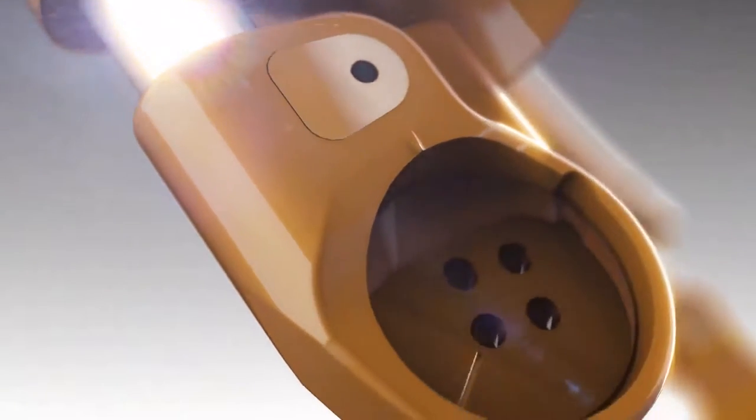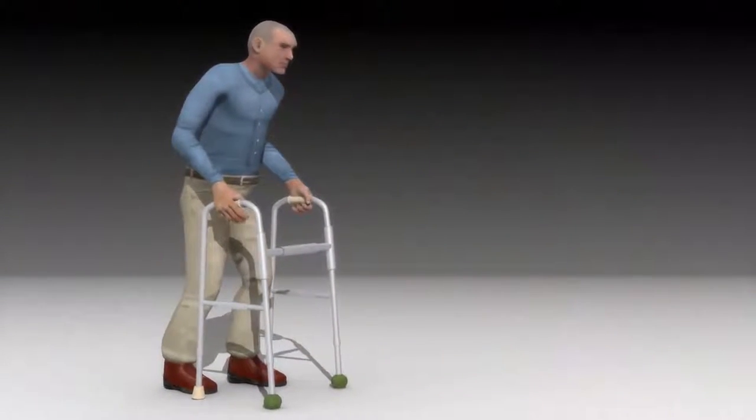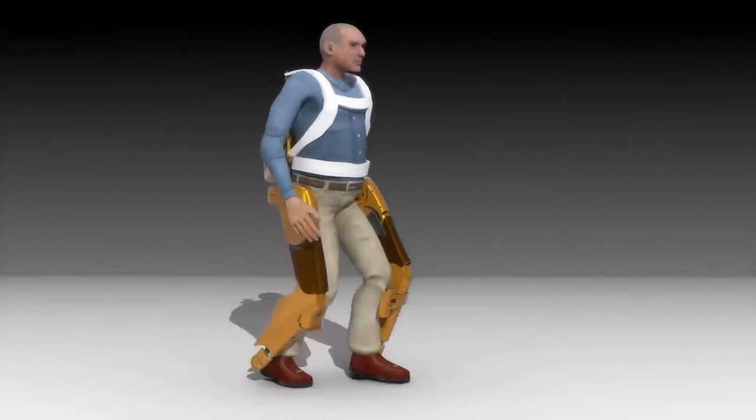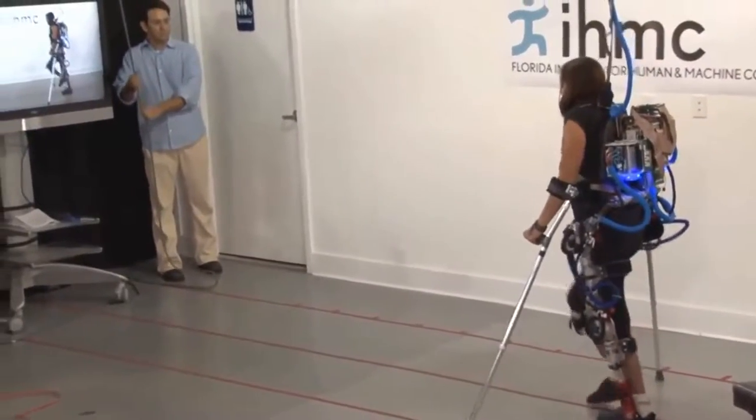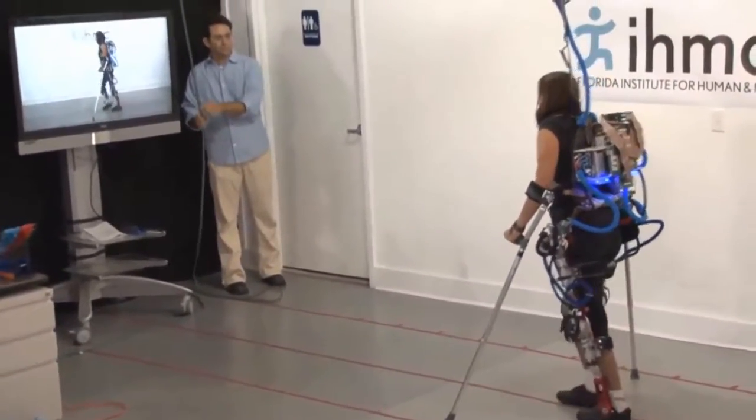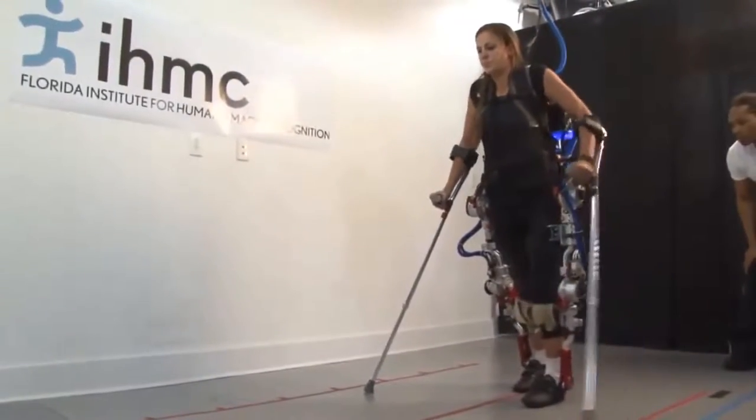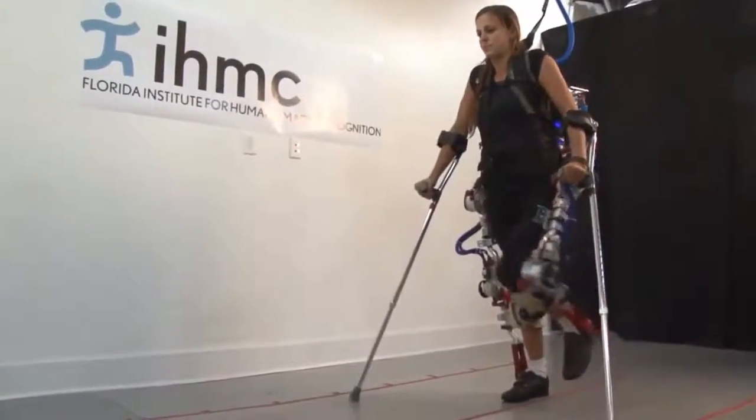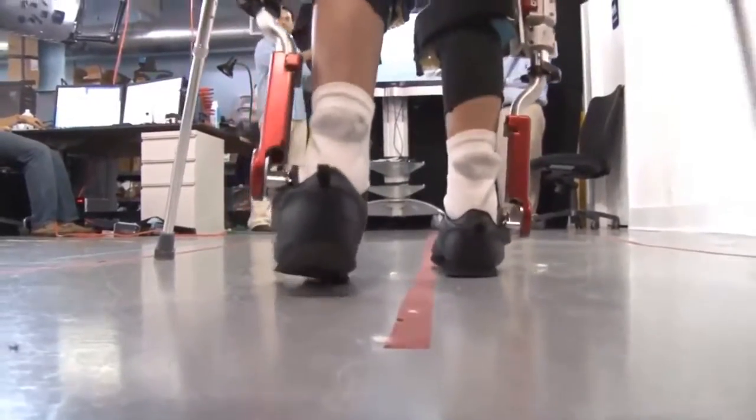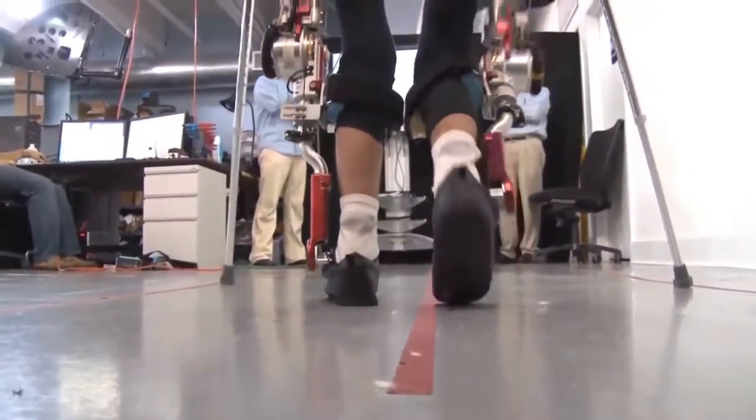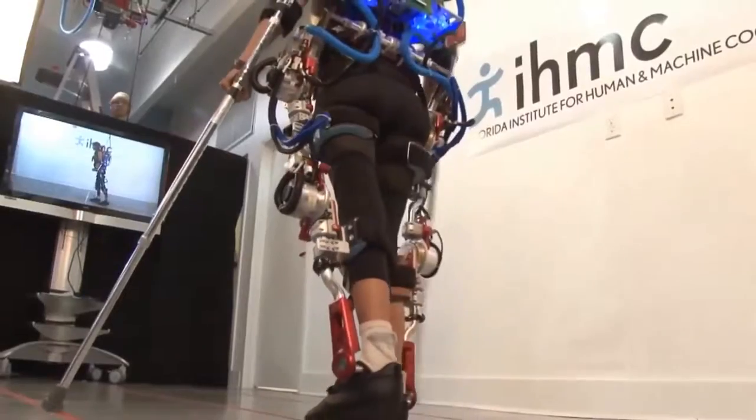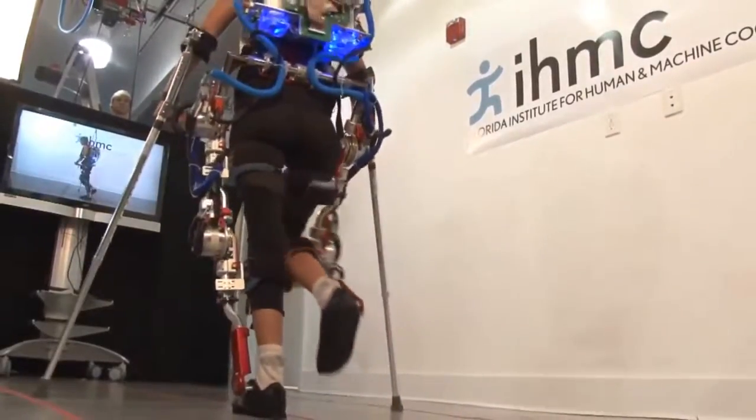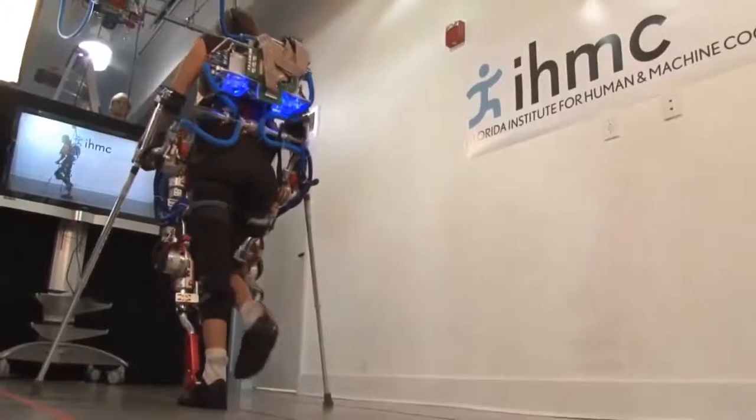NASA is very interested in the X-1 for use in space, and this same device could also be a game changer for anyone who needs rehabilitation, like stroke victims. X-1 could be even more life-changing for paraplegics. Early on in its development, the team partnered with the Florida Institute for Human and Machine Cognition. This group has been working on a mobility device that could serve as the legs for wheelchair-bound patients.